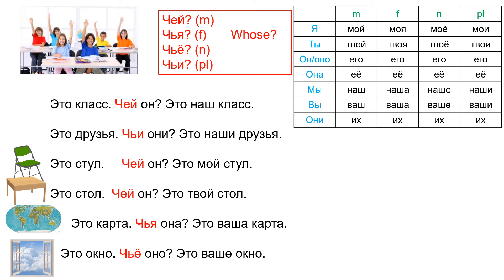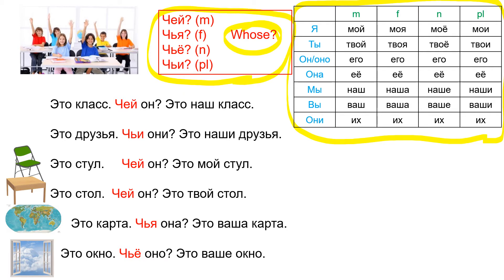And this is the main part of today's lesson — a wonderful table. You should print it out from your computer because it is very easy to look up the correct word when you do exercises. These are the words to express 'whose': чей for masculine, чья for feminine, чьё for neuter, чьи for plural. You can see the endings for each gender. This is the base of Russian grammar — you have to remember those endings.